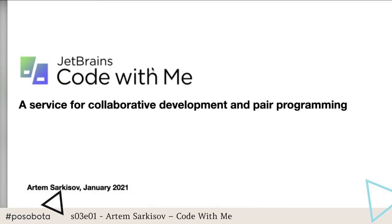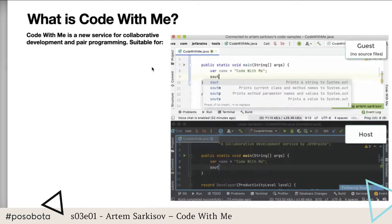So without further ado, let me navigate to its explanation and provide you with the use cases and features that it has, and let's discuss if it suits you and if you should try it out. Code With Me is a new collaborative development and pair programming service. What it does is enable you to share the currently opened project in your IDE with others and work on it together in real time.